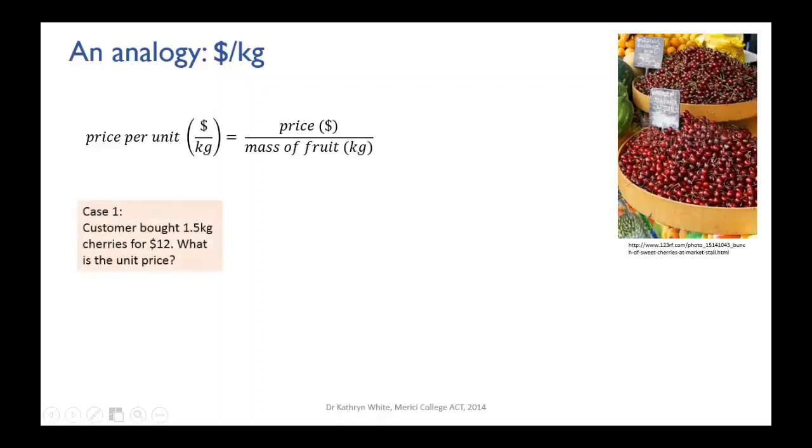Say a customer hears about your cherries and knows that a friend of theirs bought 1.5 kilos of cherries for $12. They could work out the price per unit using this relationship. The price per unit is the price over the mass, so the price was $12, and the mass of cherries was 1.5, and 12 divided by 1.5 is $8 per kilo. That's the unit price that you're selling your cherries for.